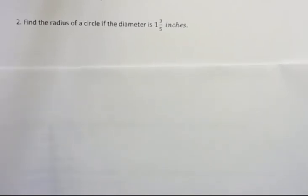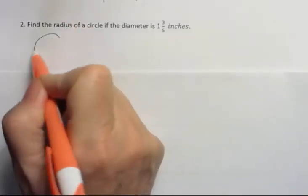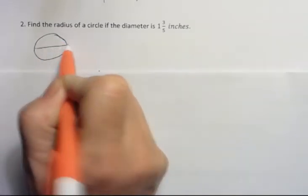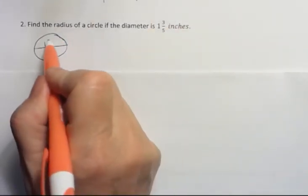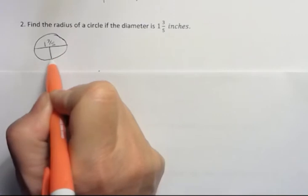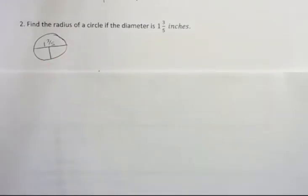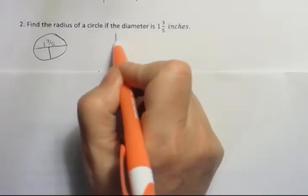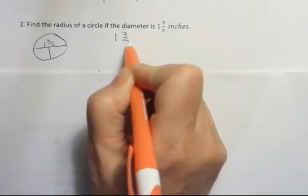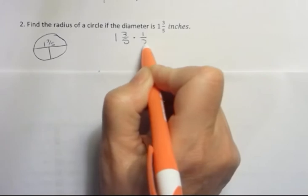Find the radius of a circle if the diameter is one and three-fifths inches. So remember, a diameter is something that goes all the way across a circle. So that's one and three-fifths. And we want to find the radius, which is half of that. Again, we want to find half of something. So I want to take one and three-fifths and multiply it by one-half.